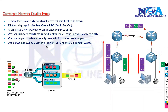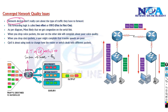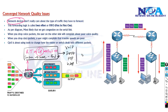To start with, we need to understand there are some network device related issues you will face. In general, whenever any networking device — a router or a switch — forwards traffic, the router checks the routing table based on the destination IP address and forwards the packet accordingly. Likewise, a switch checks the MAC address and does the forwarding based on that. Basically, the devices don't really care what type of traffic they are forwarding — whether it is normal data traffic, VIP traffic, FTP, or HTTP.